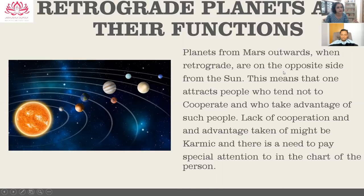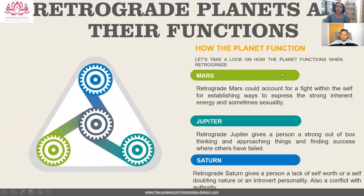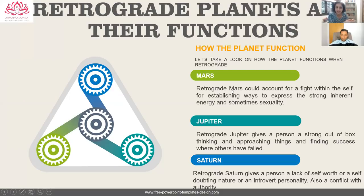We are talking about Mars, Jupiter, and Saturn — not Neptune, Uranus, or Pluto, since we are focusing on Vedic astrology. Retrograde Mars could account for a fight within the self for establishing ways to express strong inherent energy, and sometimes sexuality — especially in the case of females.